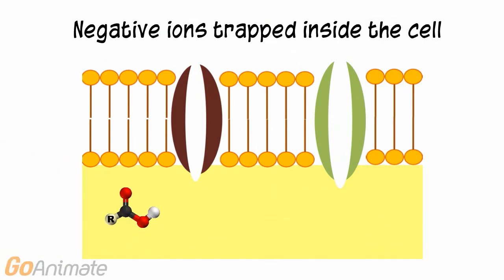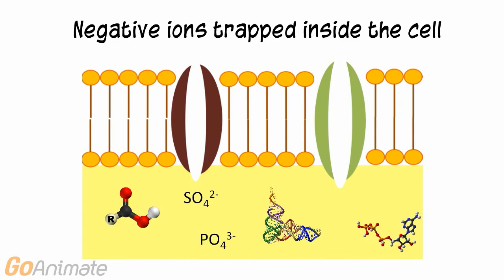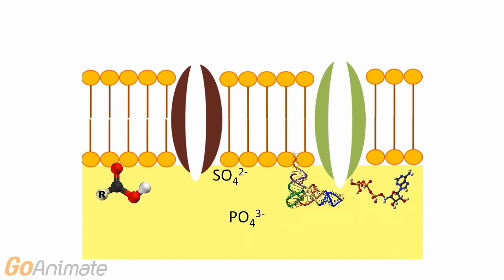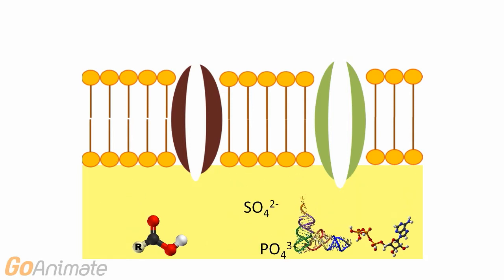There are a number of negatively charged ions inside the neuron. These include organic acids such as carboxylic acid, phosphates, sulfates, proteins, RNA and ATP. These are essentially trapped inside and work to make the inside of the cell more negative with respect to the outside.